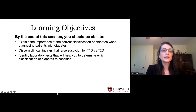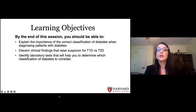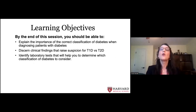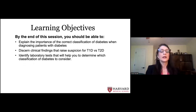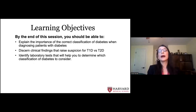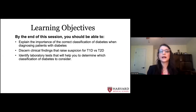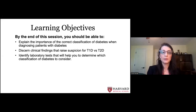So our learning objectives are that by the end of this session, you should be able to explain the importance of the correct classification of diabetes when diagnosing patients. It is important to know what exactly we're dealing with. I tell my patients, we need to understand and name the monster so that we know how to deal with that monster. Discern the clinical findings that may raise your suspicion for whether or not a patient has been accurately diagnosed with type one or type two. And what are some laboratory tests that you can use to help determine which classification of diabetes to consider?